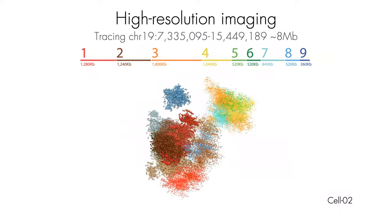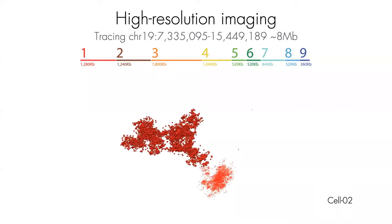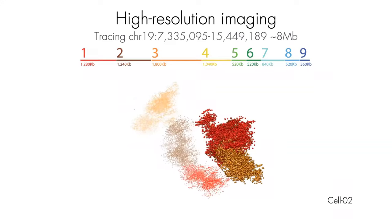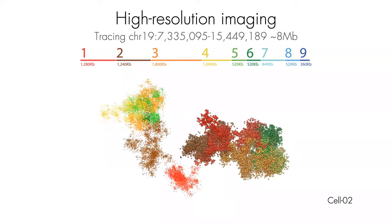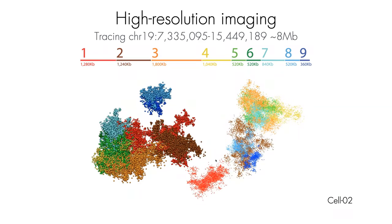Then you put it under the microscope and start collecting the blinks. This is OligoSTORM — you get this stochastic blinking of each one of the oligos, and each one of these points is one blinking. You can see segments one, two, and three being acquired under the microscope, each with a large number of blinks. This is only one cell, and what you see here are the two homologous copies of chromosome 19. In this case they were quite close in space. You really see quite a bit of structural difference between the two homologous pieces.